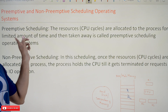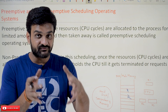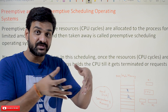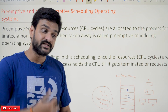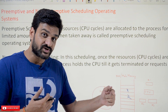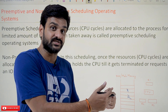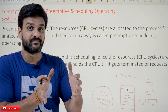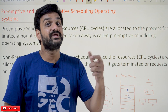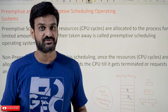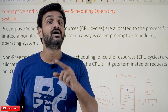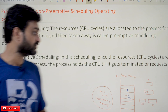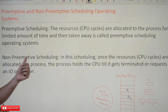After that limited amount of time, the process will be removed — switched from the running state to the ready state — and the CPU cycles are allocated to another process. Operating systems using preemptive scheduling are called preemptive scheduled operating systems, and they are also called multitasking operating systems.